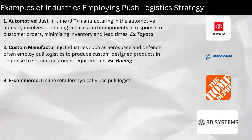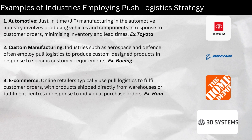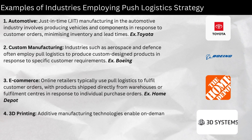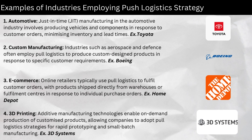Three, e-commerce — online retailers typically use pull logistics to fulfill customer orders, with products shipped directly from warehouses or fulfillment centers in response to individual purchase orders. Four, 3D printing — additive manufacturing technologies enable on-demand production of customized products, allowing companies to adopt pull logistic strategies for rapid prototyping and small batch manufacturing.